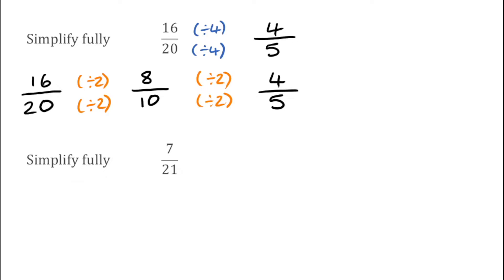For this next question we've got 7 over 21. The highest common factor of 7 and 21 is 7, so we're going to divide top and bottom by 7. If we do 7 divided by 7 we get 1, and 21 divided by 7 we get 3. So 7 over 21 fully simplified would just be 1 third.